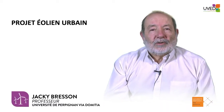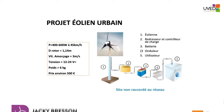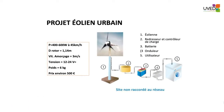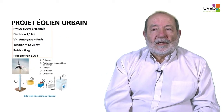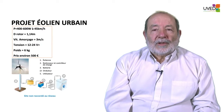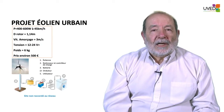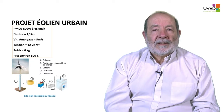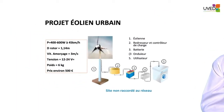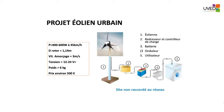Let us look at an urban project not connected to the grid. The energy must be stored in a battery. The current is a three-phase current that must be rectified to charge the battery, and from the continuous current an inverter generates an alternating current at 50 Hz, compatible with household appliances. Here we have a one-meter windmill that produces between 400 and 600 watts at a wind speed of 45 kilometers per hour.